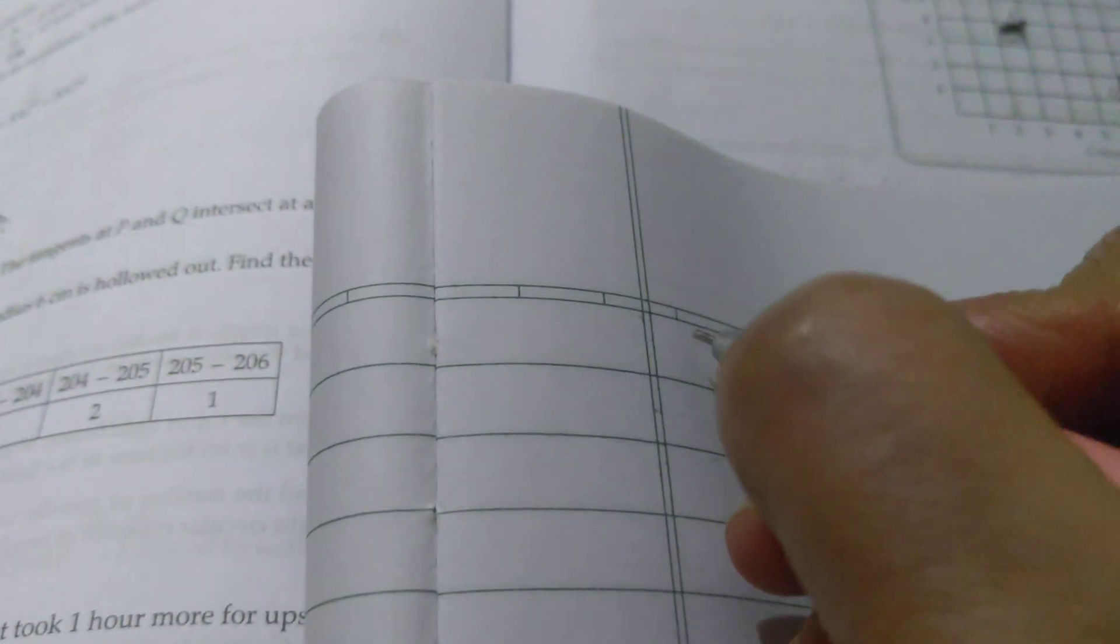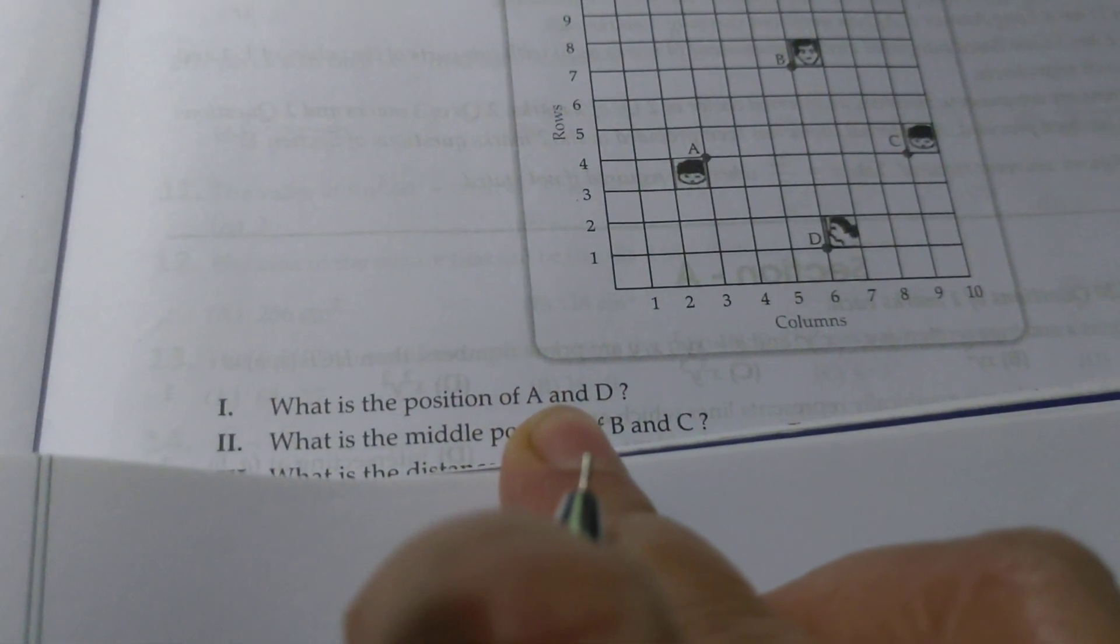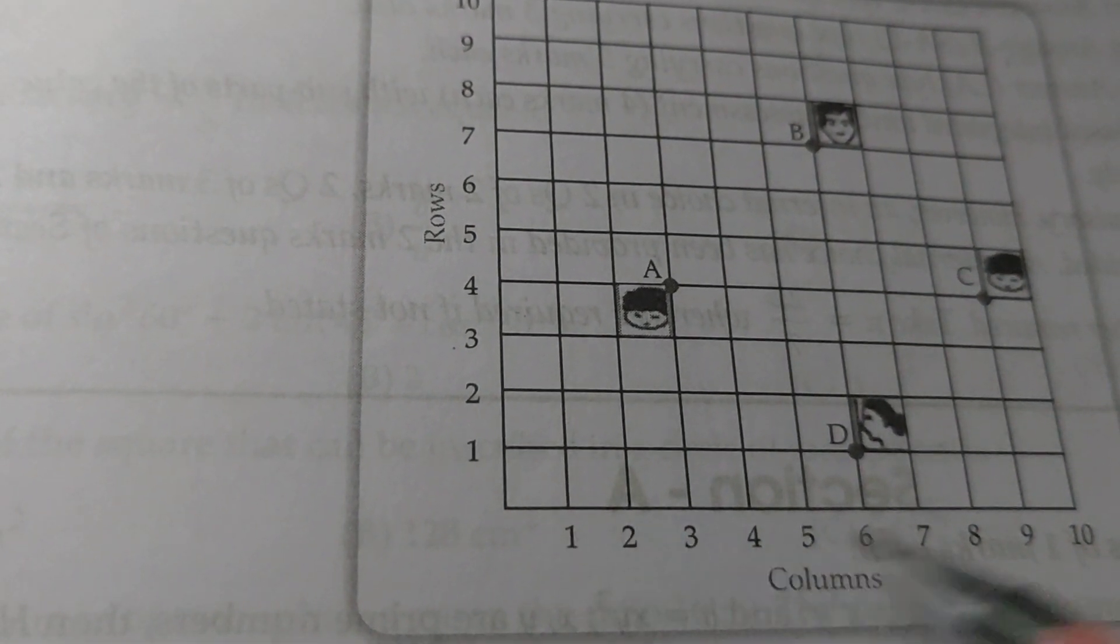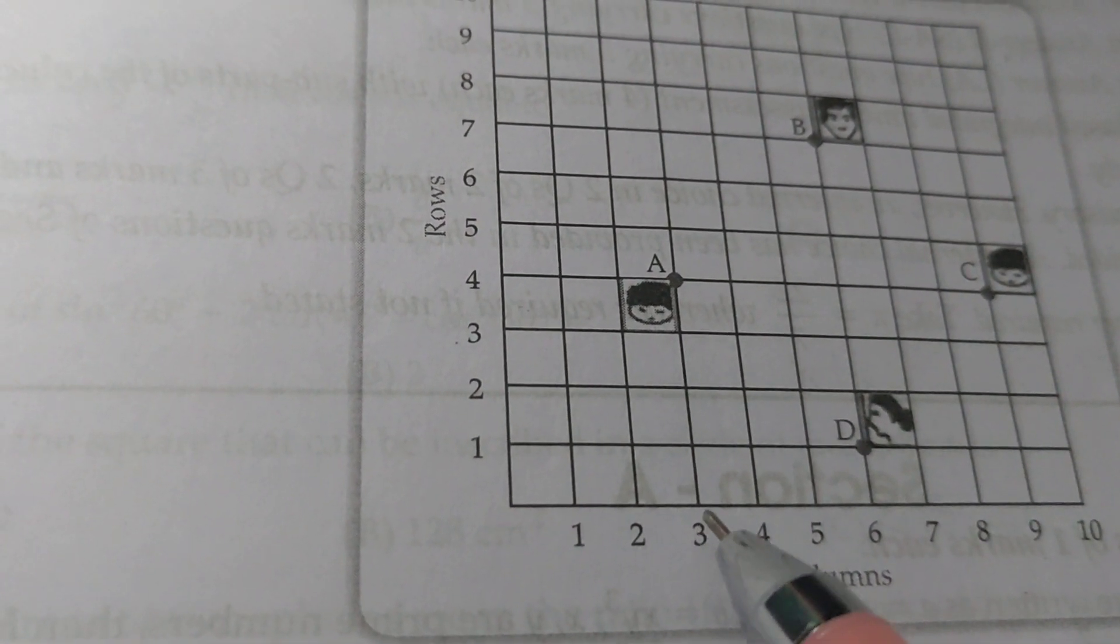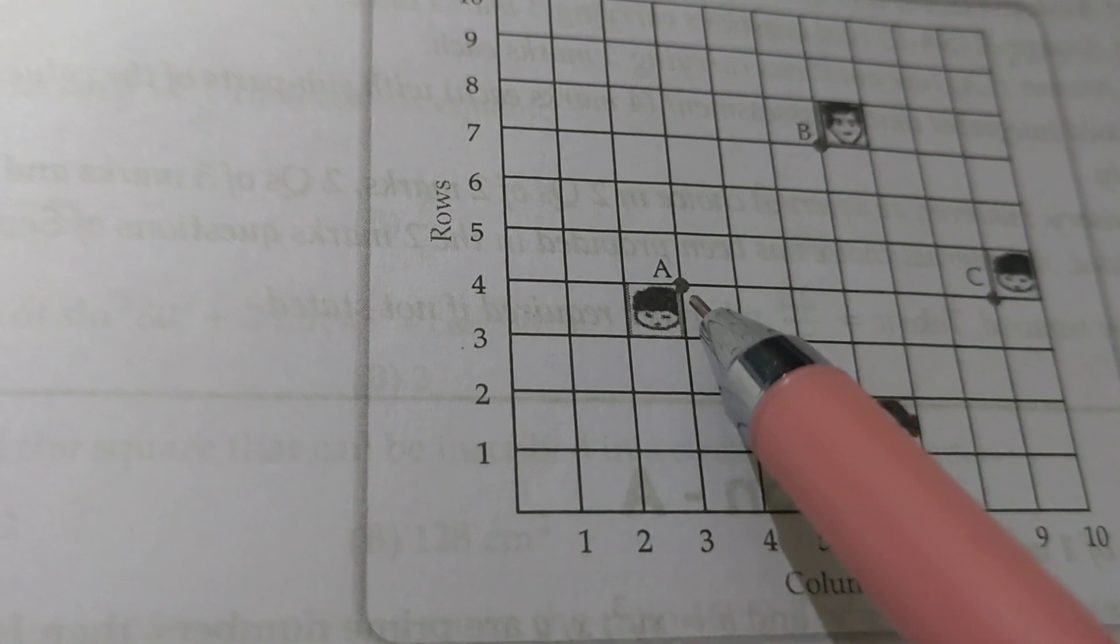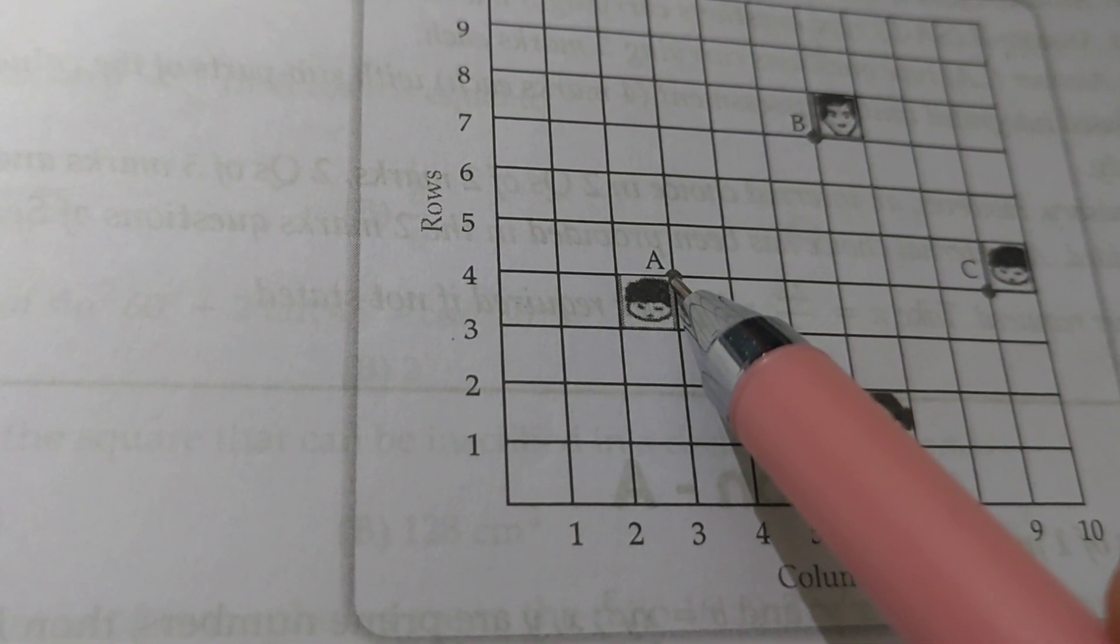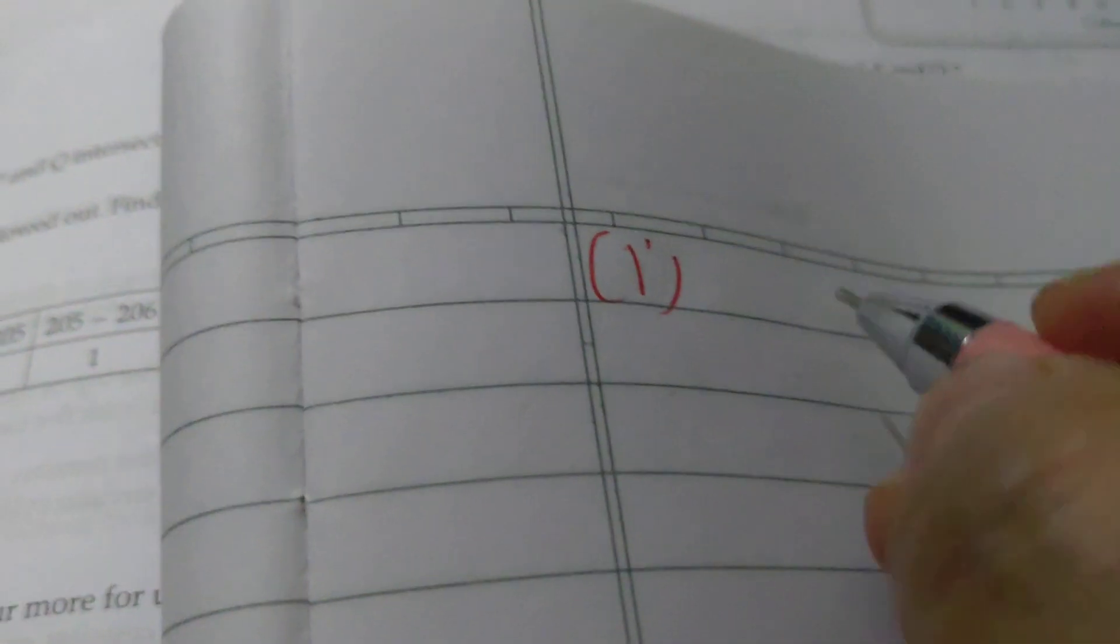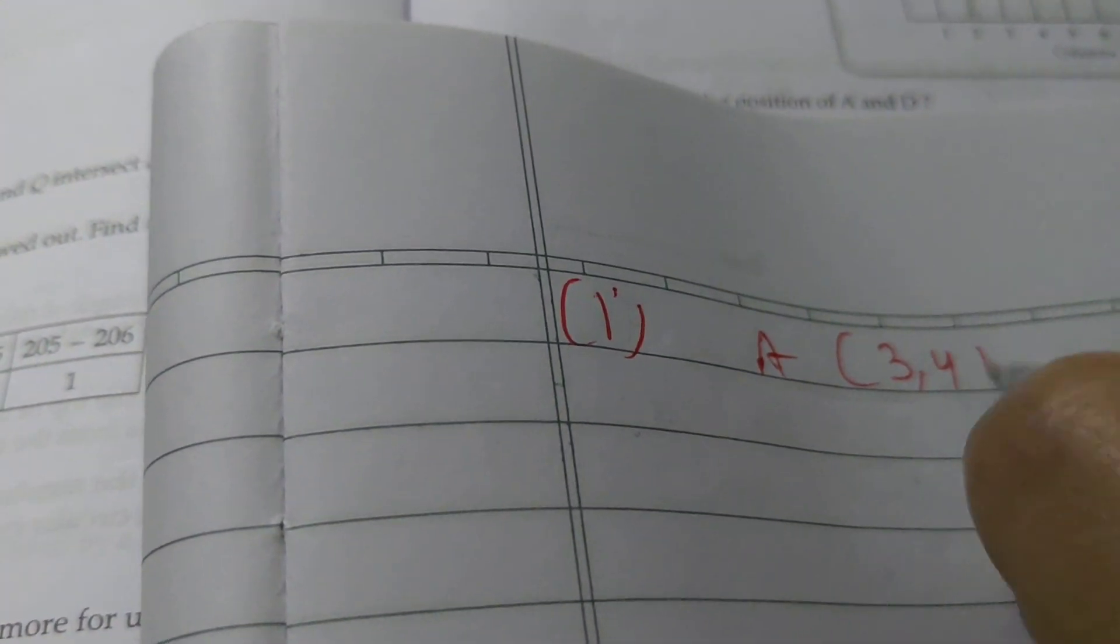Dekho, isko agar aap achhe se dekho figure ko to aapko khud samaj jayega. Sabse pehle first wala: What is the position of A and D? A dekho, A kaha par hai? Ye humari x-axis hai jo niche wali hai, aur ye wali y-axis. To x pe dekho, yeha se upar jao, ye 3 ke upar hai. To x 3 ho gaya aur y kitna, 4. To A ki position kya ho gayi? 3 and 4.